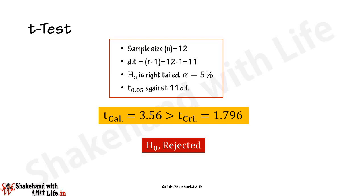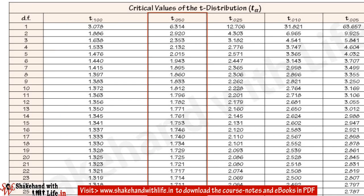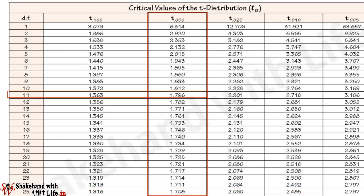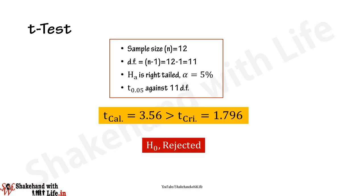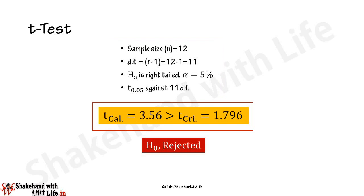Since H-a is greater-than type, this is a right-tailed condition. Using the t-distribution table at alpha equals 5% (t 0.05) against 11 degrees of freedom, the critical value of t is 1.796. Comparing the calculated t of 3.56 with the critical value of 1.796: since 3.56 is greater than 1.796, the null hypothesis is rejected.